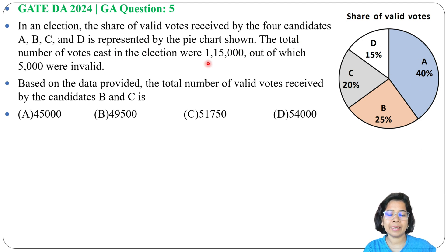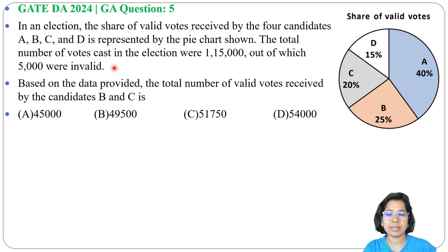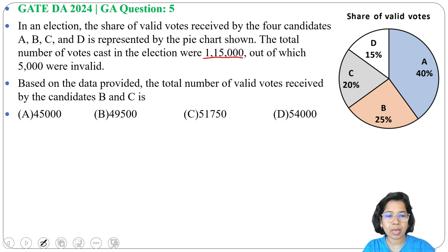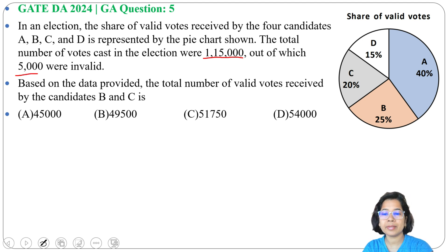The total number of votes cast in the election were 1,15,000 out of which 5,000 were invalid. The question asks for the total number of valid votes received by candidates B and C, with 4 options given.